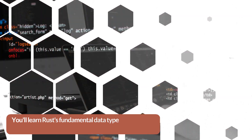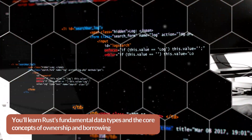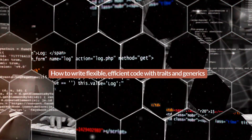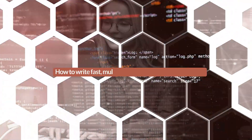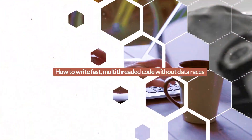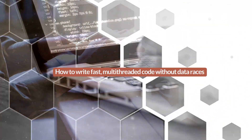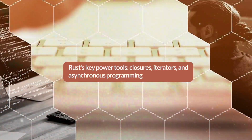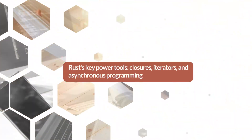You'll learn Rust's fundamental data types and the core concepts of ownership and borrowing. How to write flexible, efficient code with traits and generics. How to write fast, multithreaded code without data races. Rust's key power tools: closures, iterators, and asynchronous programming.